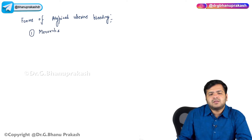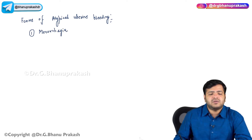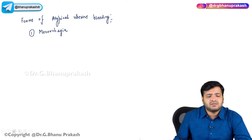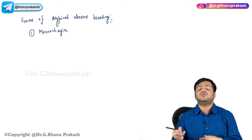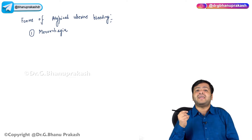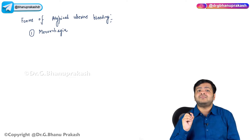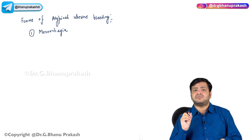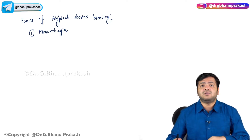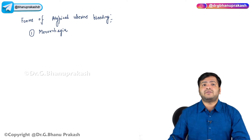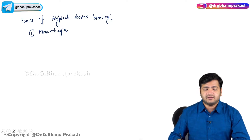The first one is menorrhagia. Now, what is menorrhagia? These are the menstrual disorders that we are discussing. Menorrhagia is defined as excessive blood loss at regular time or regular cycle.